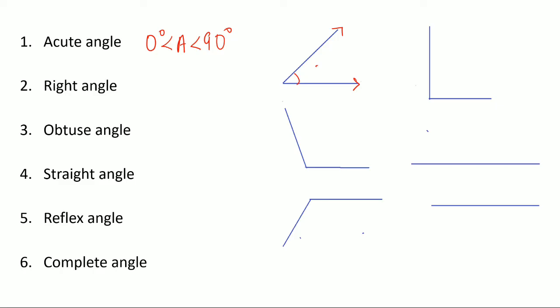For example, this angle could be 35 degrees. The next type is the right angle. If the measure of an angle is exactly 90 degrees, we call it a right angle. We show it like this — it looks like the letter L of the English alphabet.